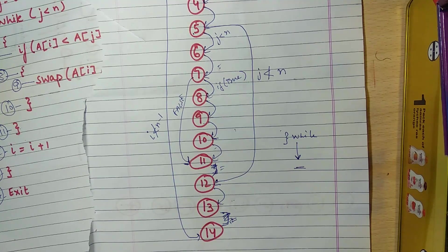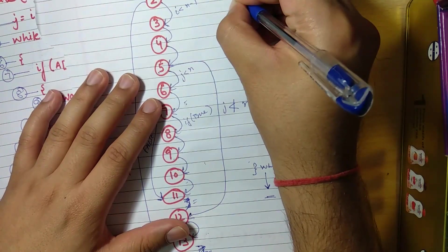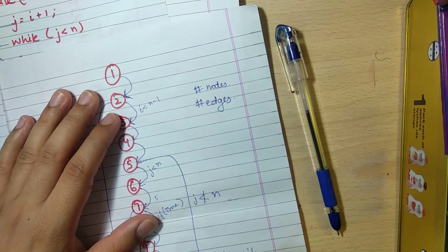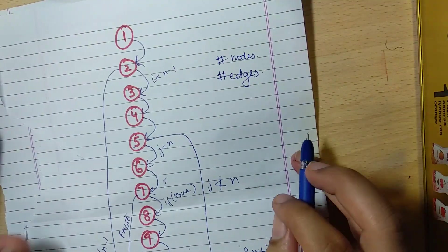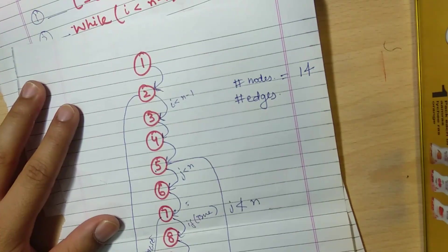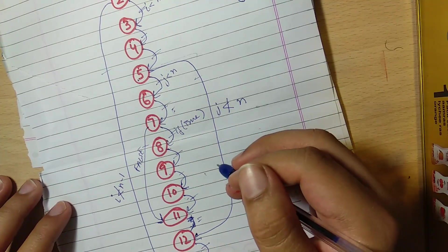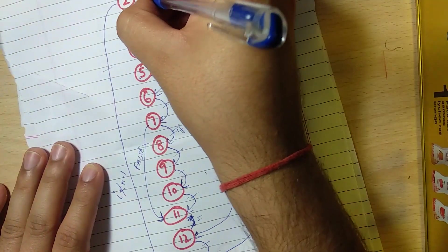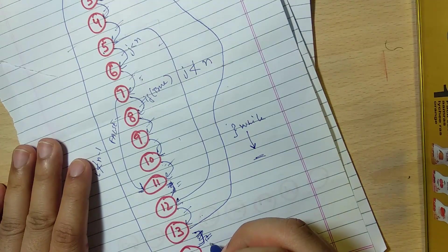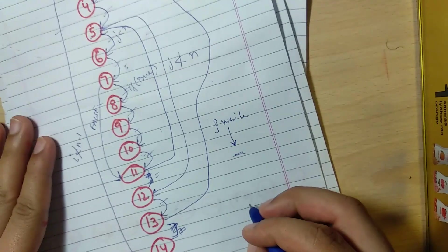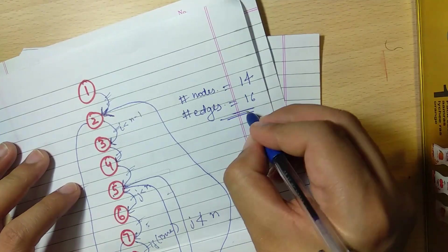So now the main thing is we will calculate the number of nodes and the number of edges. The number of nodes are fourteen — we have numbered them and they are fourteen in total. One thing I have missed: I didn't send 13 back to 2. That was my mistake. And also I haven't sent 11 back to 5. So in total, if we calculate, we get the number of edges as sixteen.